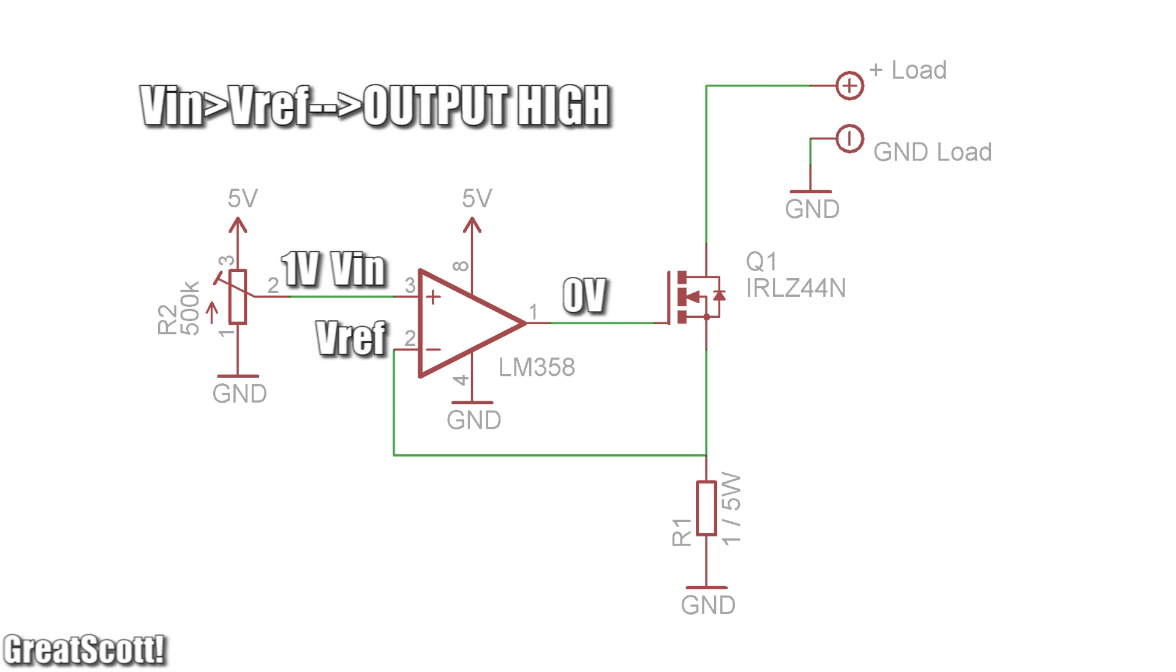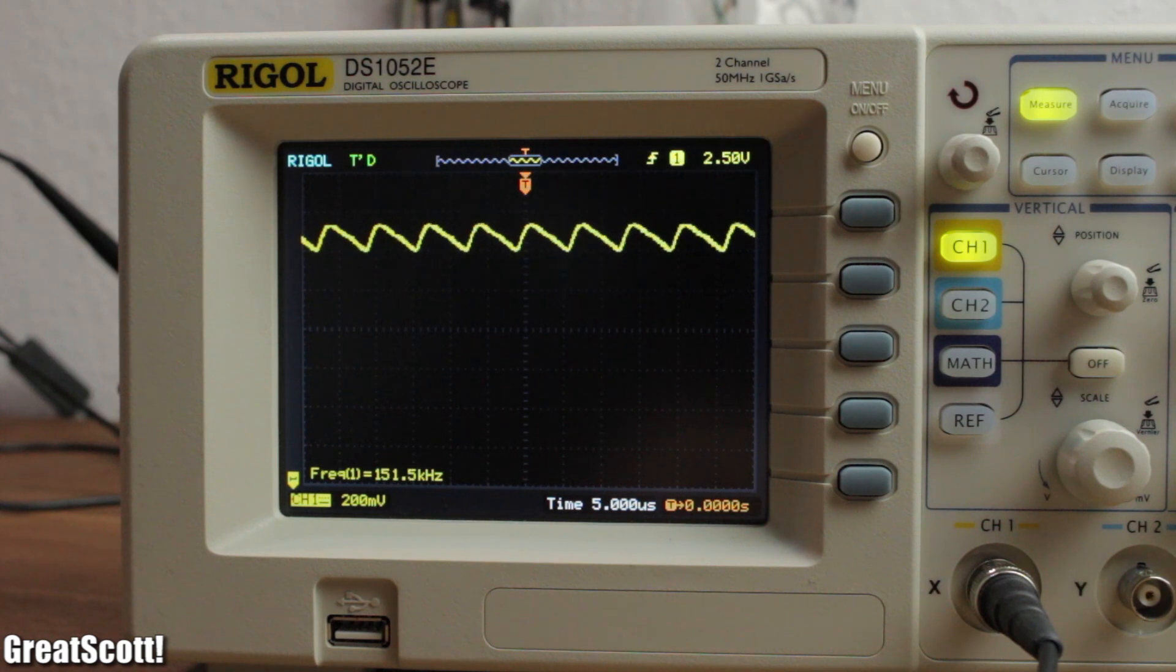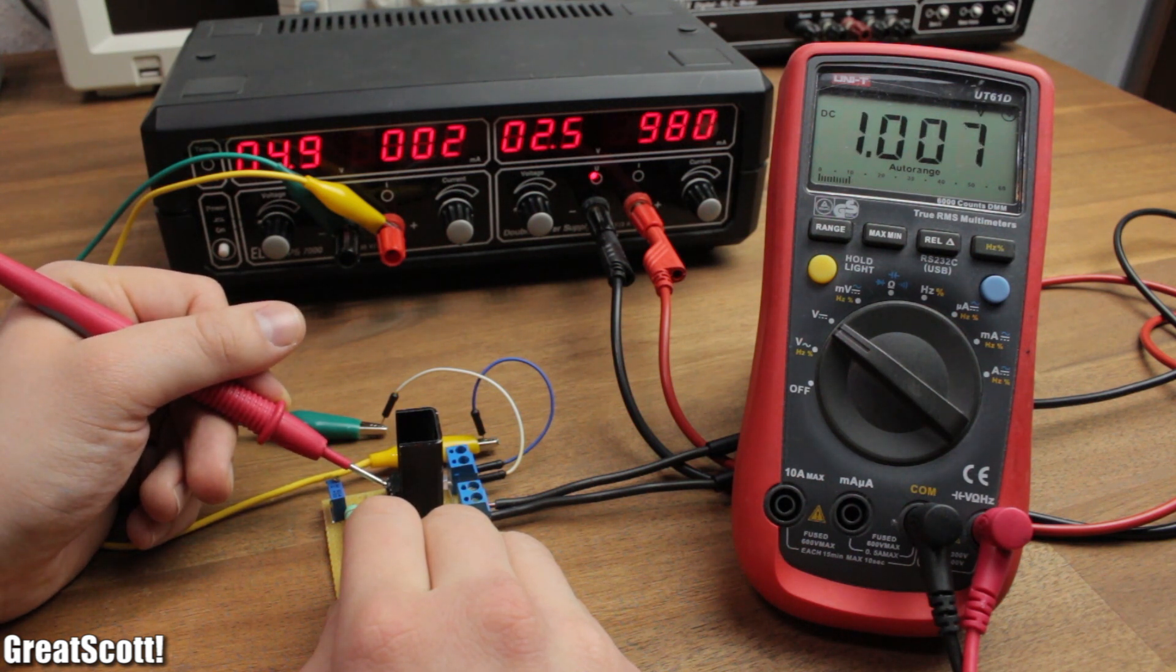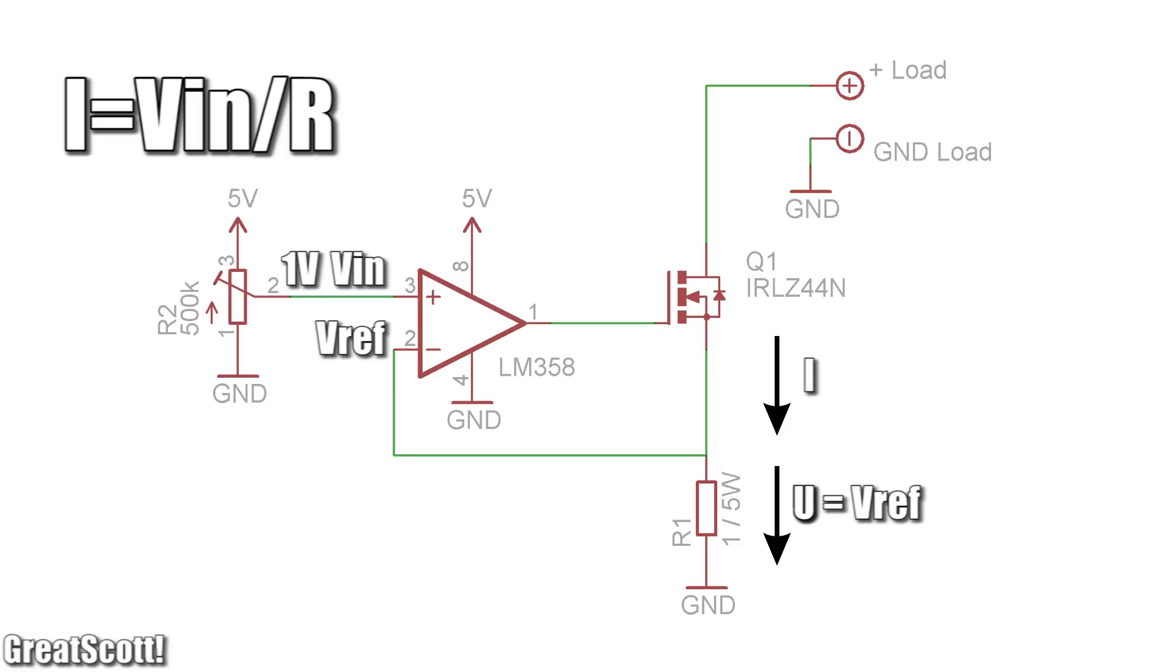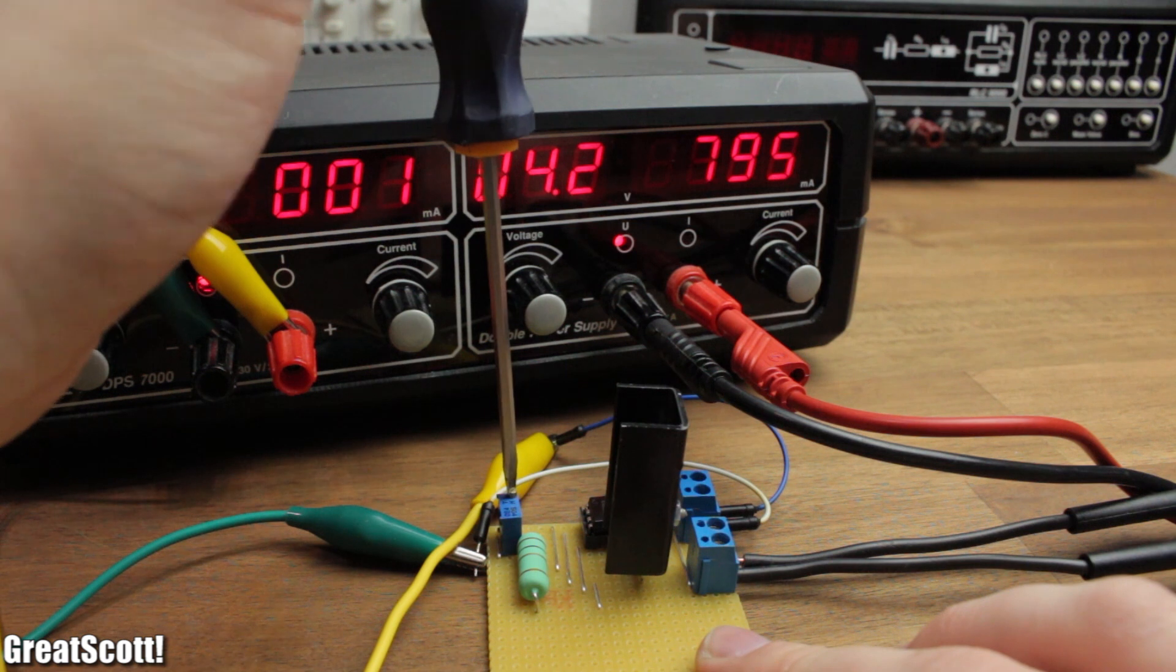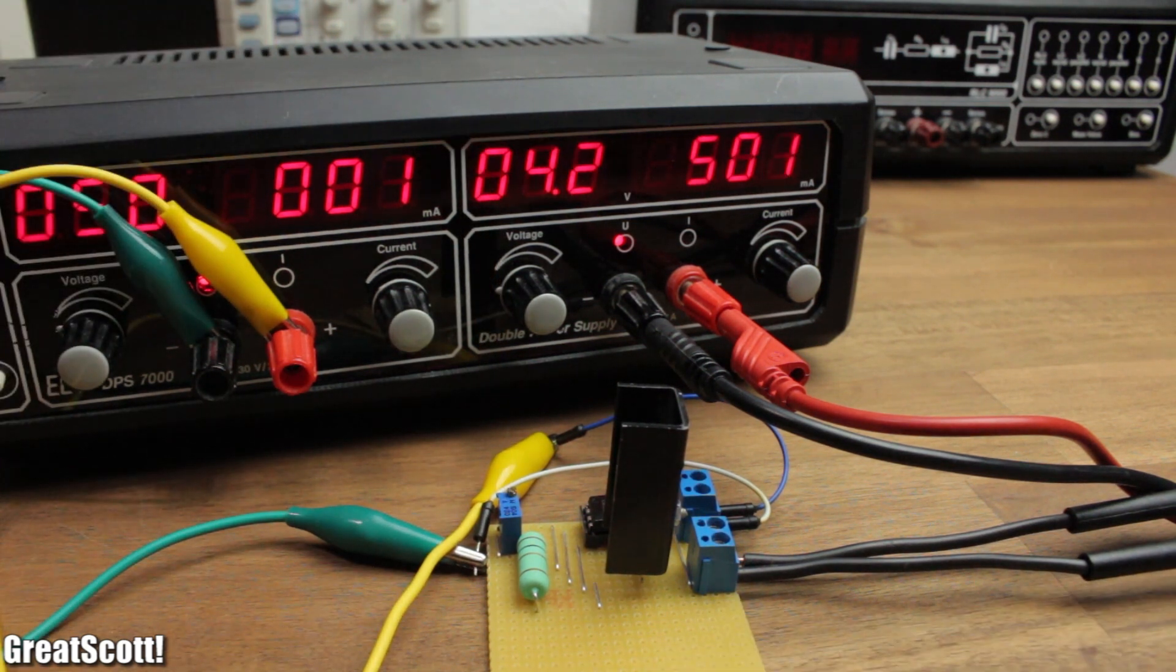But before reaching 0 volts on the output, VIN is already higher than VREF, which opens the gate again. This results in a fast changing cycle between on and off with a frequency of over 100 kHz. The both inputs try to stay on the same voltage level, which lets us calculate the constant current: it is VIN divided by resistance. In our case, 1 volt divided by 1 ohm equals 1 amp. And as you can see, it works flawlessly. Now, let's adjust the potentiometer to get a load of 500 milliamps.